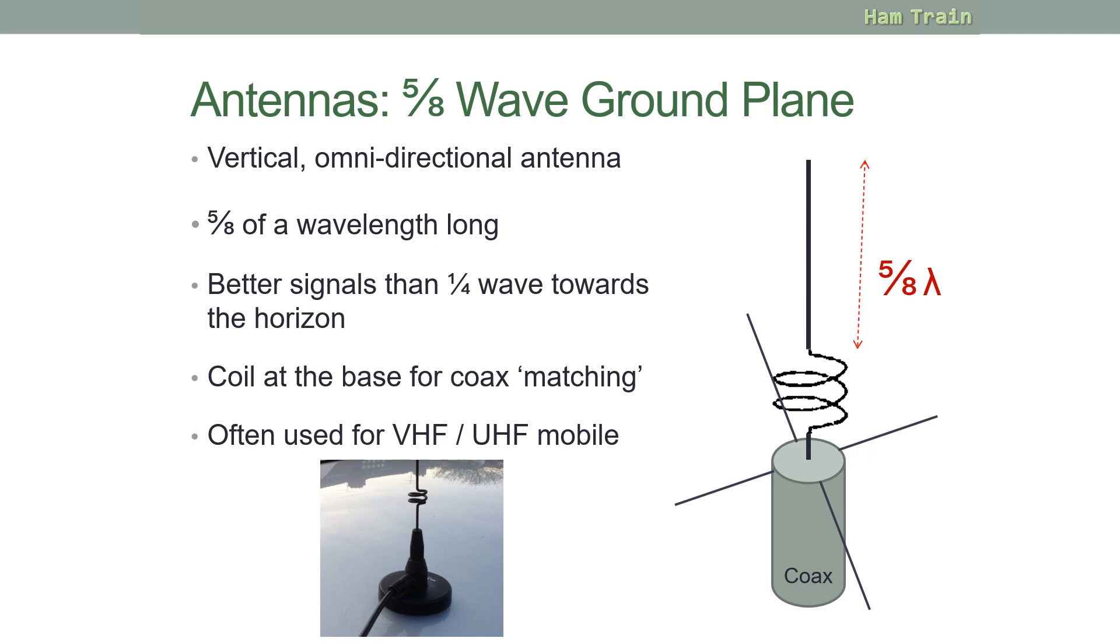Next, a very similar antenna, the 5 eighth wave ground plane. Again, it's a vertical antenna. It's 5 eighths of a wavelength long, as the name suggests. And these are slightly better at getting your signal to push out towards the horizon. You'll see the coil at the base is for coax matching, and we'll talk about matching a little later. Again, here are your radials acting as the ground plane. These are often used on VHF and UHF mobile, and here you can see a picture of a 5 eighths on top of a car with a magnetic mount. Effectively, the car is acting as the ground plane to push the signal out, and there is our matching coil.